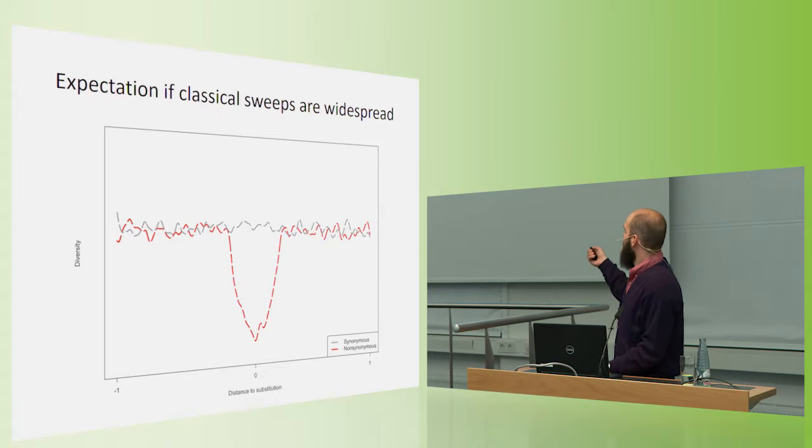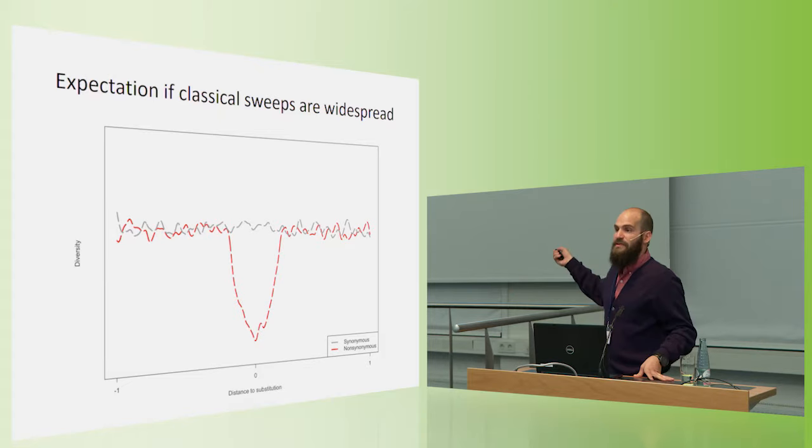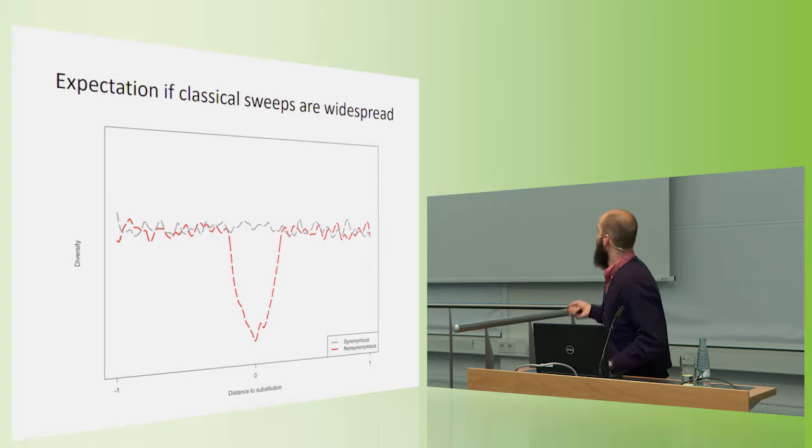Then if we look surrounding non-synonymous substitutions and we see a reduction of diversity surrounding this class of substitution, this would suggest that there's been a lot more or that hard sweeps or this classical form of selection I just described has been a driving force of evolution. So we can look at this pattern averaged over all substitutions in the genome in order to determine how important have hard sweeps been.